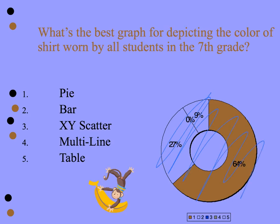What's the best graph for depicting the color of shirt worn by all students in the seventh grade? Hopefully you can answer this in three seconds — pie chart. Again, it is depicting a whole, and the other variable — color — is categorical. So the pie chart is divided with different colors represented by the different areas.